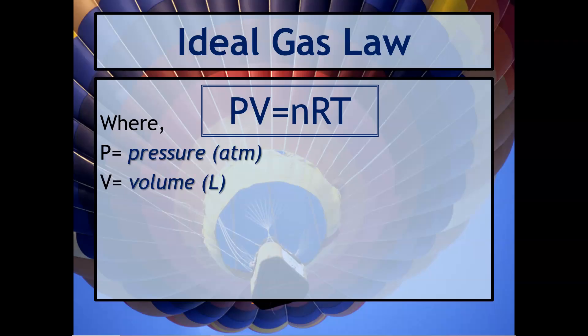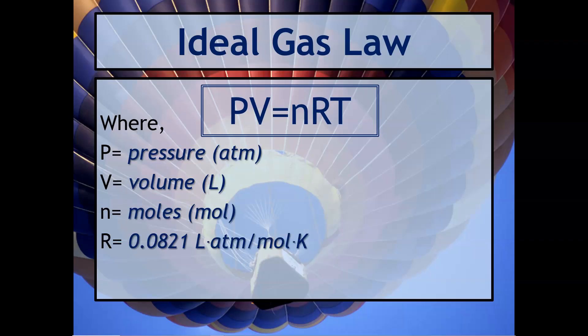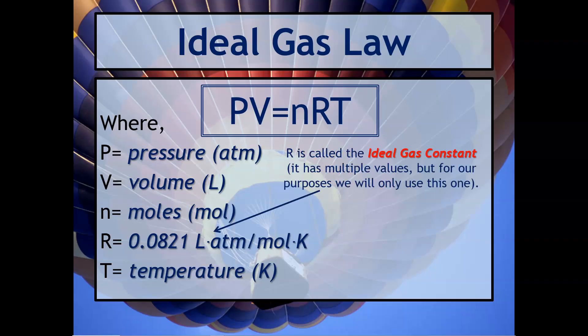This is the ideal gas law: PV = nRT. Pressure is always in ATM, V stands for volume always in liters, n is the amount in moles, R is the ideal gas constant, and T is always in Kelvin. The units of R are liter·atmospheres per mole·Kelvin — that's why your volume must be in liters, pressure in atmospheres, amount in moles, and temperature in Kelvin.